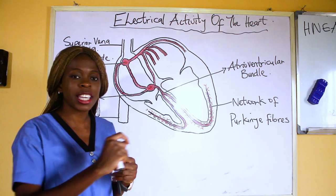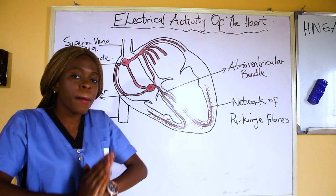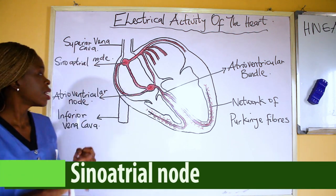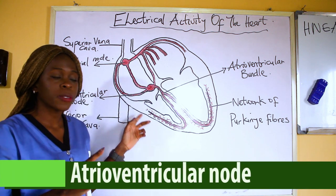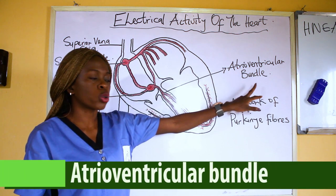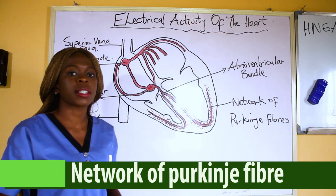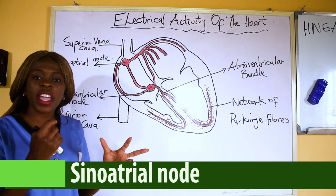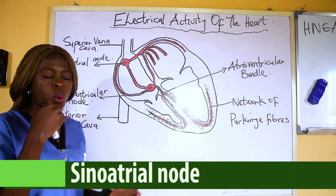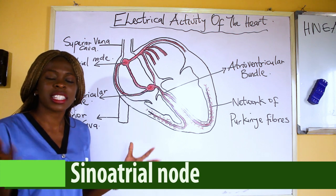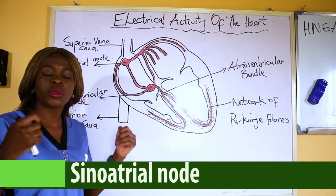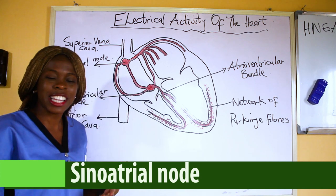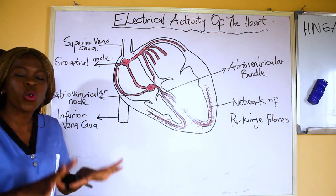There are some key words to take note of that will help us remember the electrical activity of the heart: the sinoatrial node, the atrioventricular node, the atrioventricular bundle, and the network of Purkinje fibers. Starting with the sinoatrial node — the sinoatrial node is also known as the pacemaker. It generates electrical impulses because this sinoatrial node cell is unstable and excited, constantly generating impulses. That is why it is known as the pacemaker.